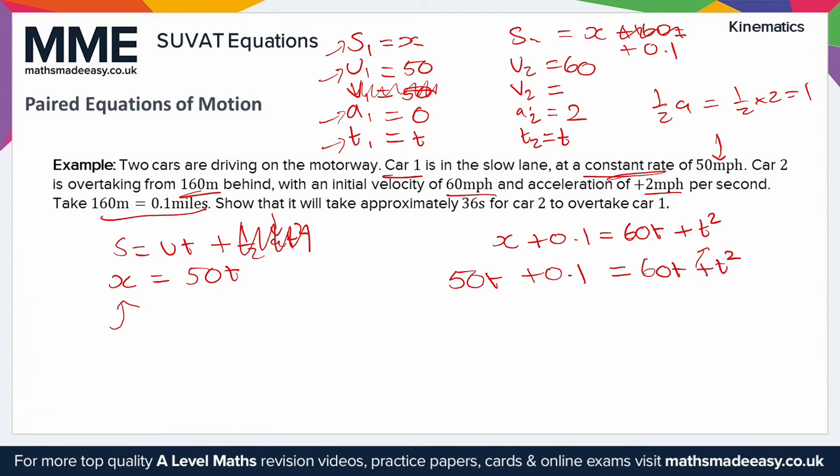We've got two equations and we're trying to find T. Let's try and eliminate x. Quite nicely, this equation is x equals 50T, so we can sub that in and we'll get 50T plus 0.1 equals 60T plus T squared. Now we're going to have to rearrange this to a normal quadratic. Of course that means we want it equal to 0. What we're going to have is T squared plus 10T minus 0.1, and that's going to be equal to 0. I've taken away the 50T and taken away the 0.1 so it's all on the right hand side and it equals 0.